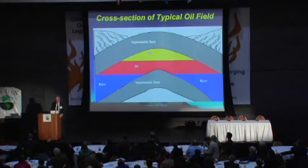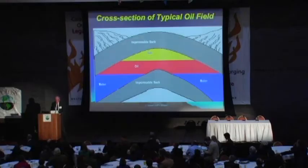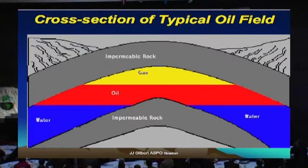An oil field, as most of us probably know, consists of porous rock. The tiny pores in the rock are filled with a mixture of hydrocarbon and water. The oil field exists for two reasons: first, because it has an impermeable cap rock over it, which stops the hydrocarbon in the pore system from moving away.